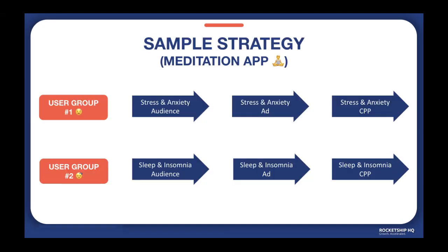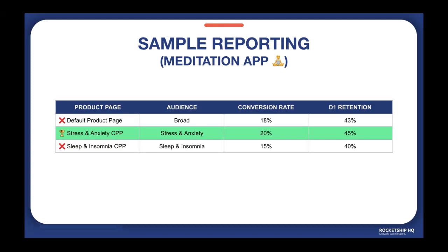Moving on, we have another sample strategy for a meditation app. We have split our audiences into two broad categories: user group one, focused towards the stress and anxiety audience, and user group two, focused towards sleep and insomnia. Each of these users will be shown ads with specific visuals and messaging and will be directed to the same themed CPP. Based on the results, we see that the stress and anxiety user group has a higher conversion rate and D1 retention and is therefore the winning segment.